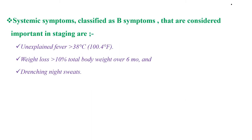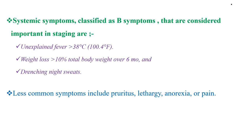Systemic symptoms classified as B symptoms, which are important in staging, include unexplained fever, weight loss of more than 10% of total body weight over 6 months, and drenching or severe night sweats. Less common symptoms include pruritus, lethargy, anorexia, or pain.